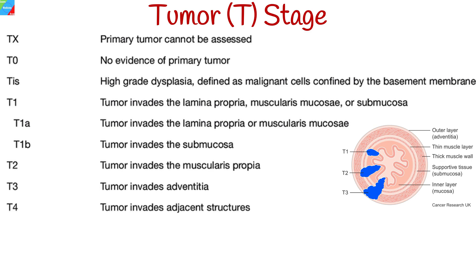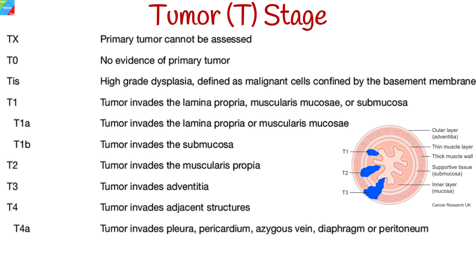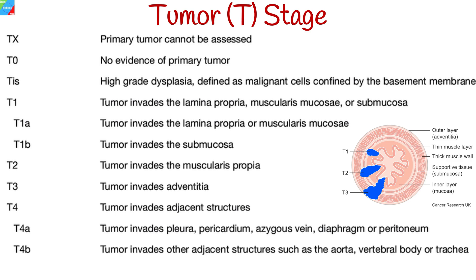T4 shows that tumor has invaded nearby structures. T4 can further be subclassified into T4a and T4b. In T4a, tumor invades pleura, pericardium, azygous vein, diaphragm, or peritoneum. In T4b, tumor invades other adjacent structures such as the aorta, vertebral body, or trachea.